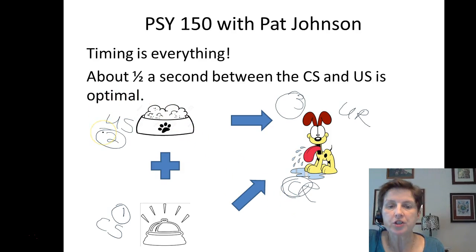So what I want you to know is that the optimal interval between the conditioned stimulus and the unconditioned stimulus is about a half a second. In other words, you want it to go bell food, bell food. You want it to be a very short interval between the bell and the food.